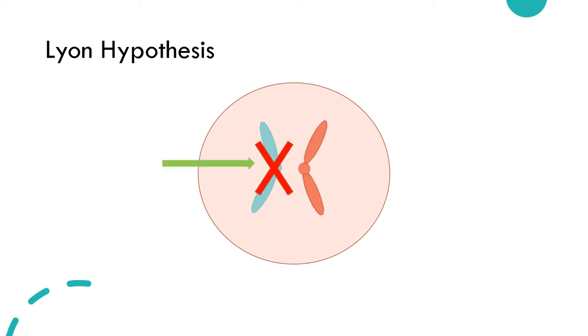The inactivated X chromosome in each cell is called a Barr body, and the same Barr body will be present in all daughter cells following division.